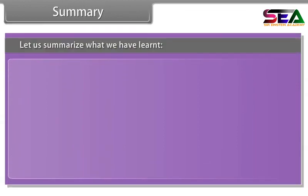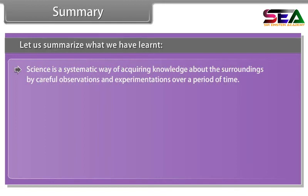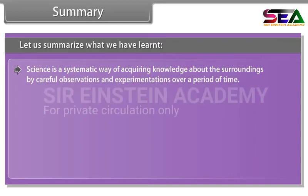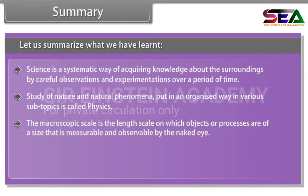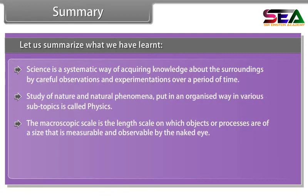Summary. Let us summarize what we have learned. Science is a systematic way of acquiring knowledge about the surroundings by careful observations and experimentations over a period of time. Study of nature and natural phenomena, put in an organized way in various subtopics, is called physics. The macroscopic scale is the length scale on which objects or processes are of a size that is measurable and observable by the naked eye.